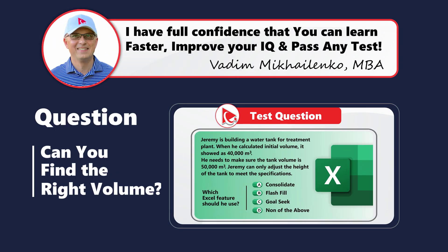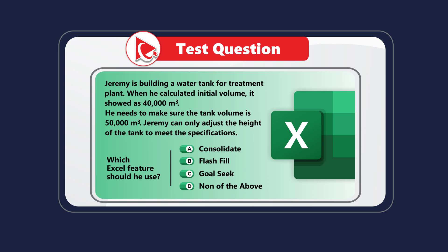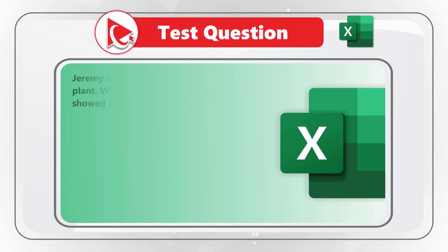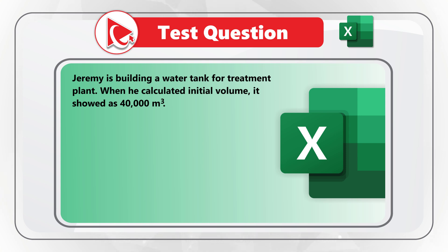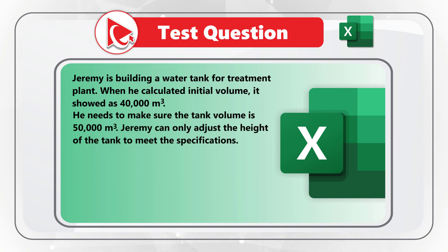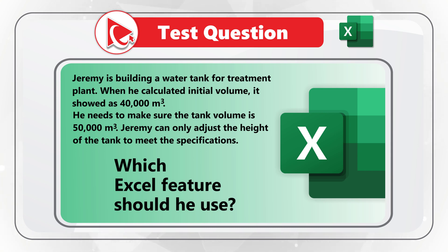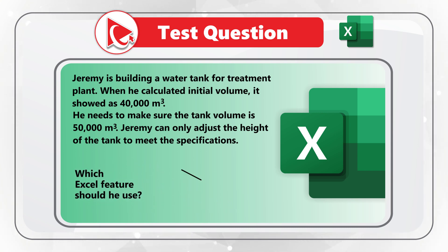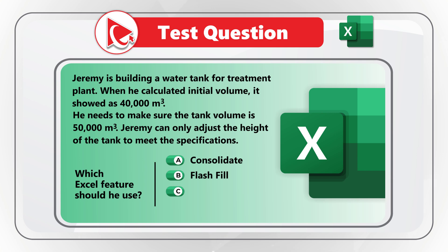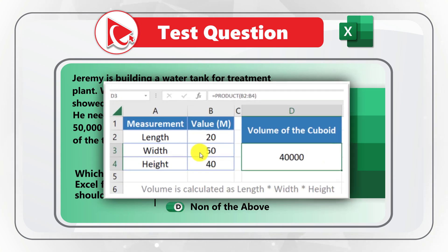Here's an amazing question to test your knowledge of Excel features. Jeremy is building a tank for a treatment plant. When he calculated the initial volume, it showed as 40,000 cubic meters. He needs to make sure the tank's volume is 50,000 cubic meters, and Jeremy can only adjust the height of the tank. Which Excel feature should Jeremy use? You're presented with four choices: choice A — Consolidate, choice B — Flash Fill, choice C — Goal Seek, and choice D — None of the above.